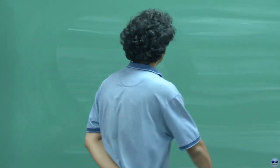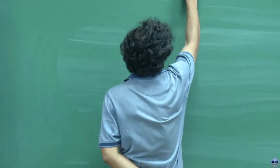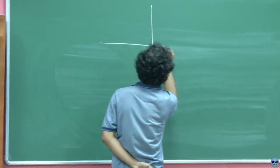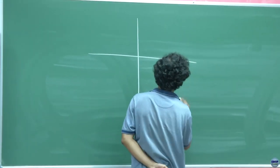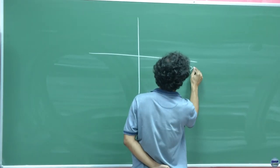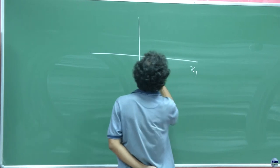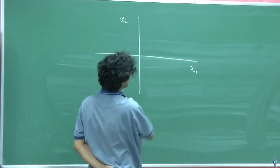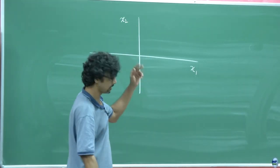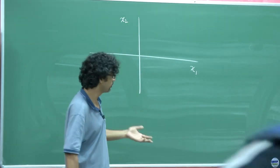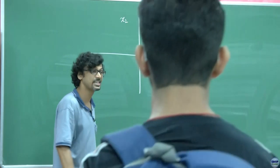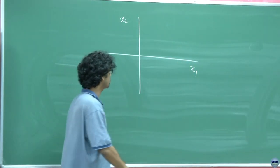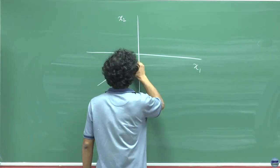We showed you one kind of representation of this solution where x1 and x2 — which in control theory we call the state variables — serve as our coordinate axes for the phase portrait.